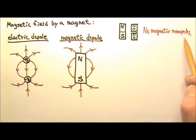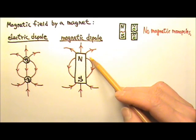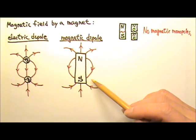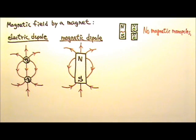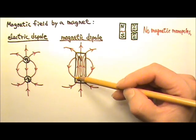No magnetic monopoles with only north or only south have ever been found. This means magnetic field lines have no place to originate from and have no place to terminate at. Therefore, they form closed loops and go through the inside of the magnet like this.